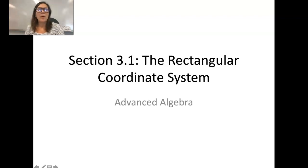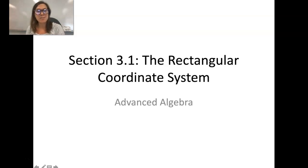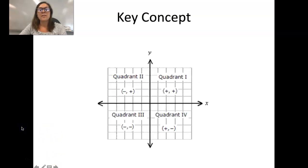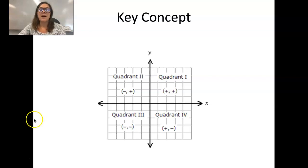Hi everyone! Welcome to the beginning of chapter 3 where we're going to be getting into the rectangular coordinate system. Do you remember what the rectangular coordinate system is? Probably not, but I'm sure this image will be a nice refresher. Here is your rectangular coordinate system. You have an x and a y axis. The top quadrant is quadrant 1 where both your x and your y values are positive.